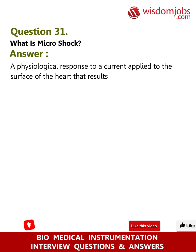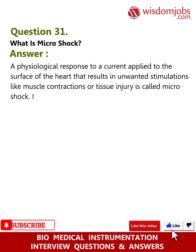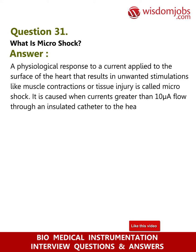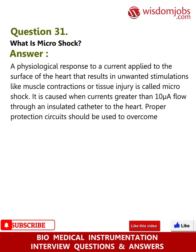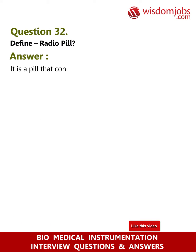Question 31: What is micro shock? Answer: A physiological response to a current applied to the surface of the heart that results in unwanted stimulations like muscle contractions or tissue injury is called micro shock. It is caused when currents greater than 10 microamperes flow through an insulated catheter to the heart. Proper protection circuits should be used to overcome micro shocks.